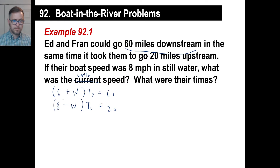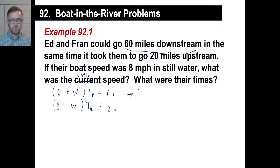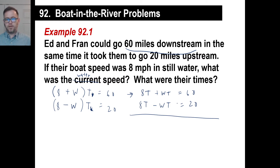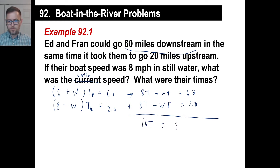Go ahead and multiply out these two equations. We get 8t + wt = 60, and 8t − wt = 20. Now we want to eliminate the wt terms — if we added both wt equations, that doesn't help. We want just t left over, so we're going to add the equations together.